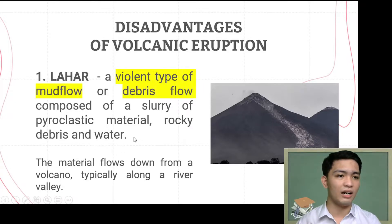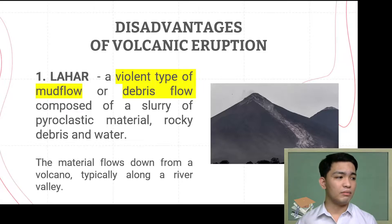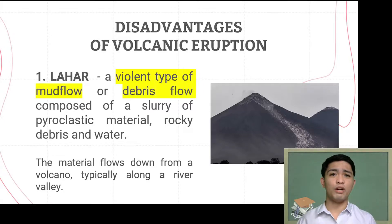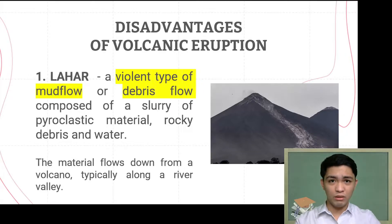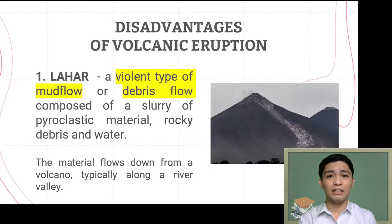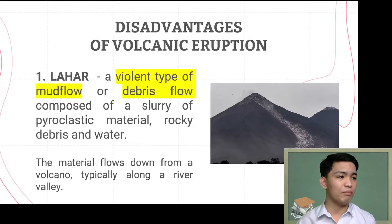What triggers lahar? It is triggered by melting snow and ice or by ejecting water from a crater lake. At the top of the volcano, in deep areas, there may be ice or snow. Because of the volcanic activity, that snow melts into water. After the volcanic eruption, pyroclastic material and rocky debris settle on the slope. When the snow turns into water, it flows down together with those materials, creating this violent mud flow.